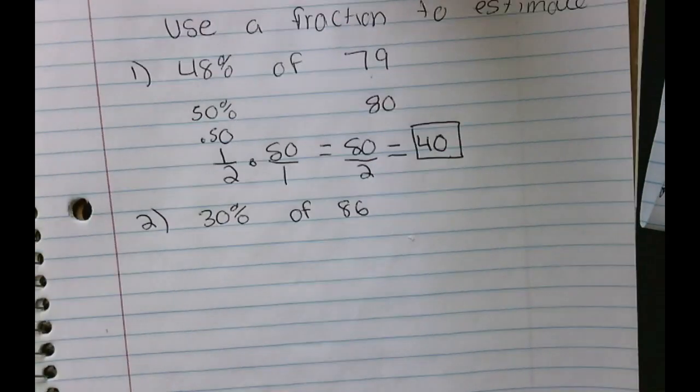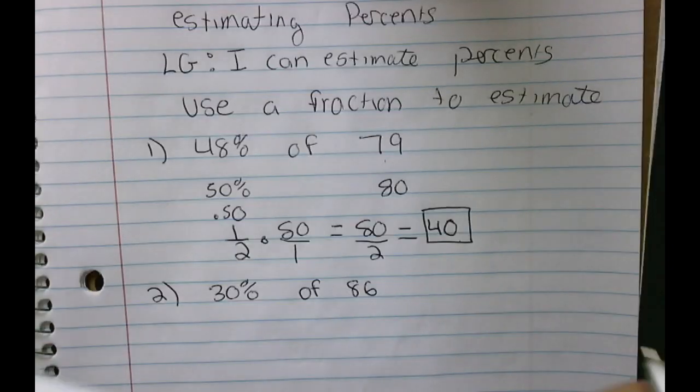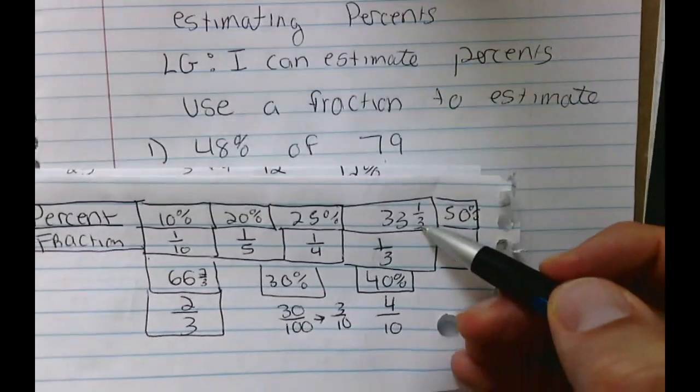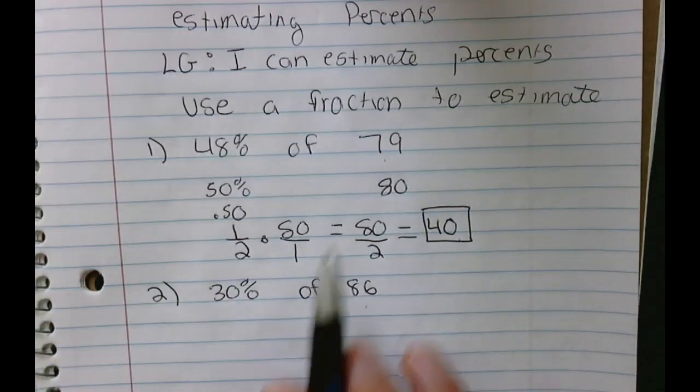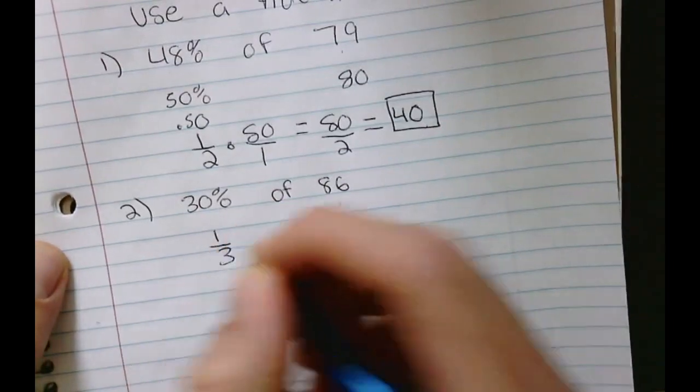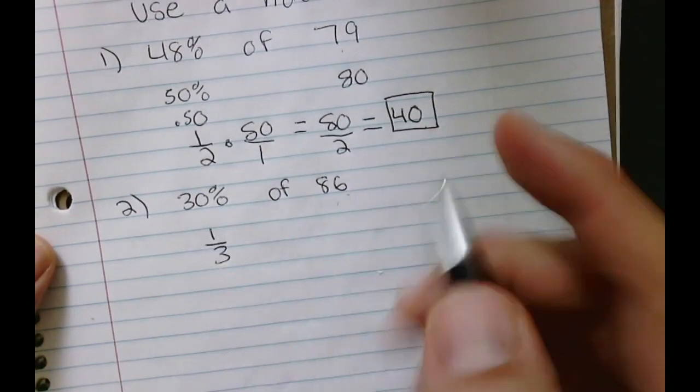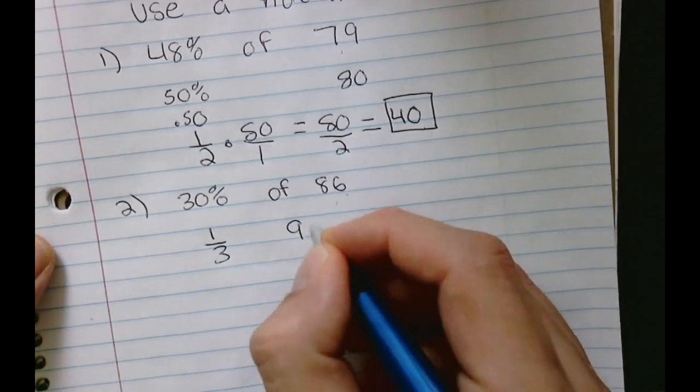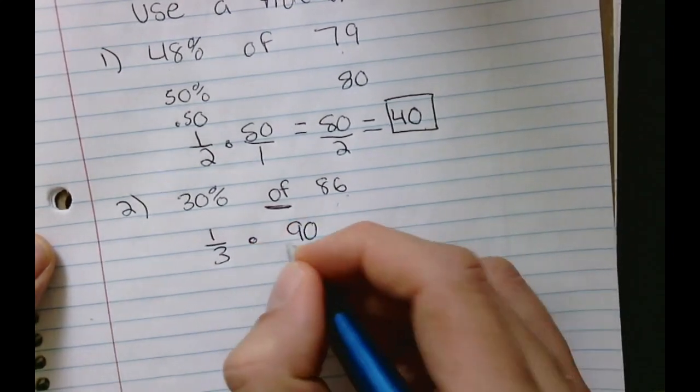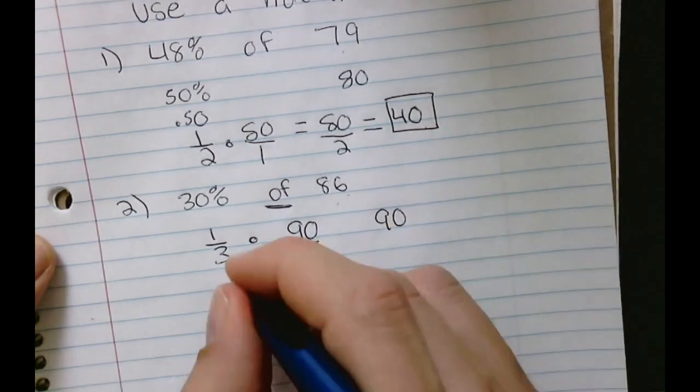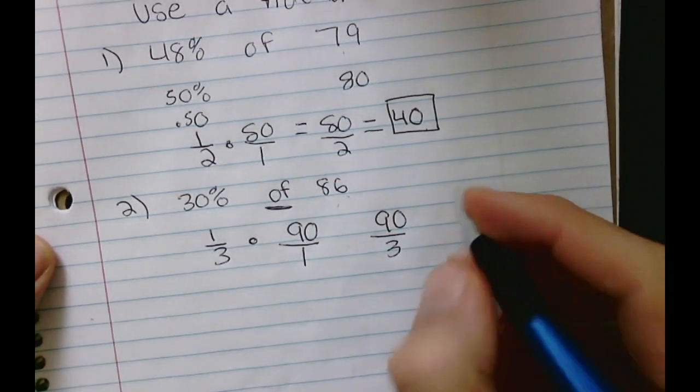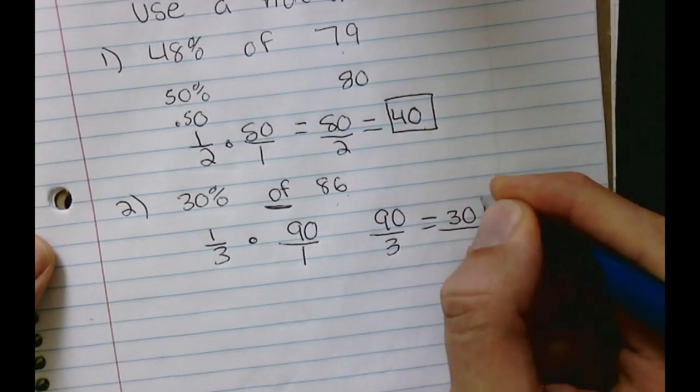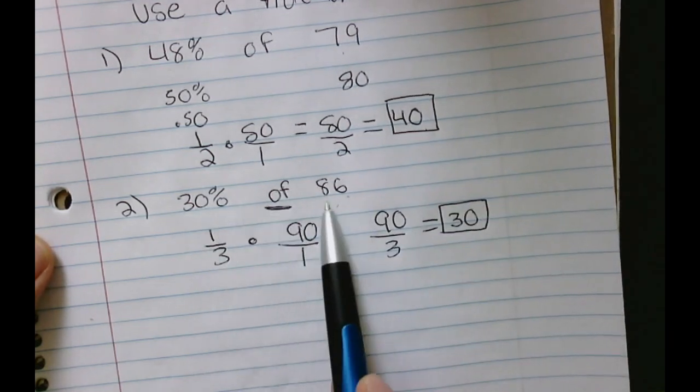Let's do another one. 30% of 86. And I look back at my sheet here, I can see that 30% is pretty close to 33 and a third. So, because I'm using fractions here, I'll do one-third. And then 86, a compatible number with one-third, would be 90. And that means multiplying. So 90 times 1 is 90, and 3 times 1 is 3. 90 divided by 3 is 30. So 30% of 86 is 30.